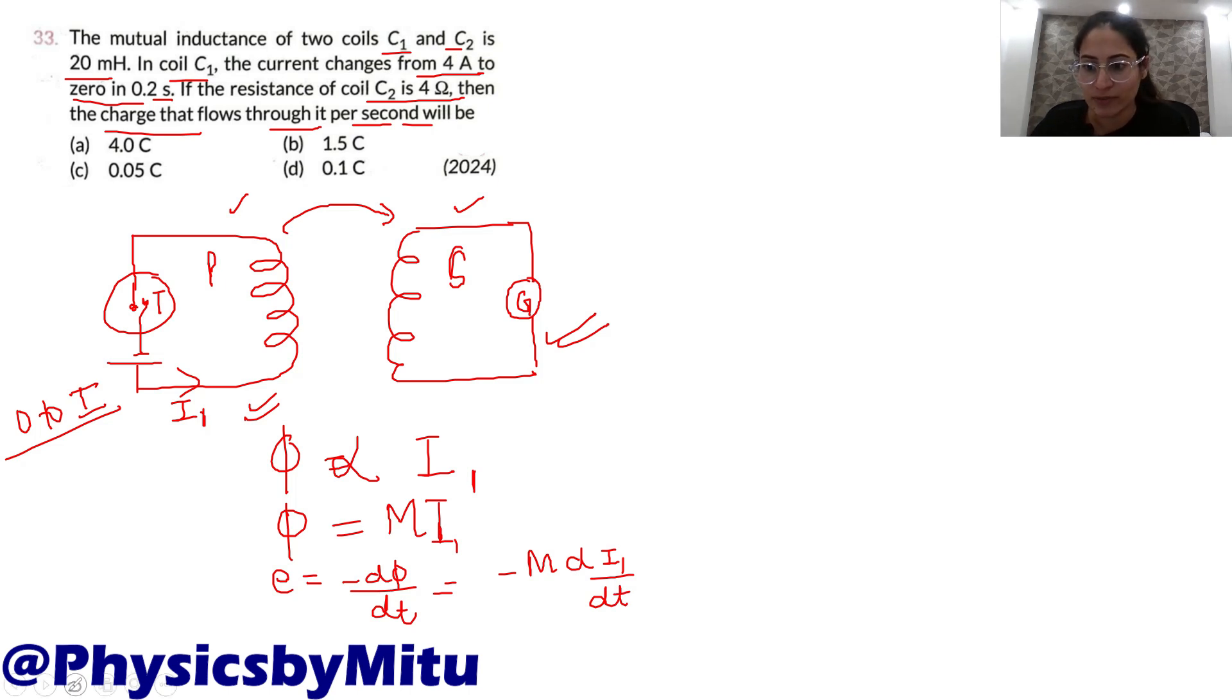So minus, if you put the value of flux, you get the formula M·di/dt. We will be using this formula in the question. Let the primary coil be C1 and secondary coil be C2. In C1, the current changes from 4 ampere to 0 in 0.2 seconds.